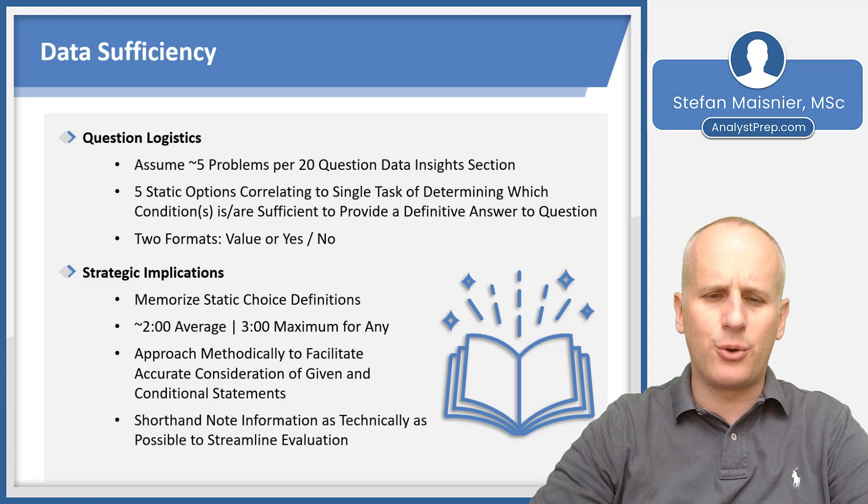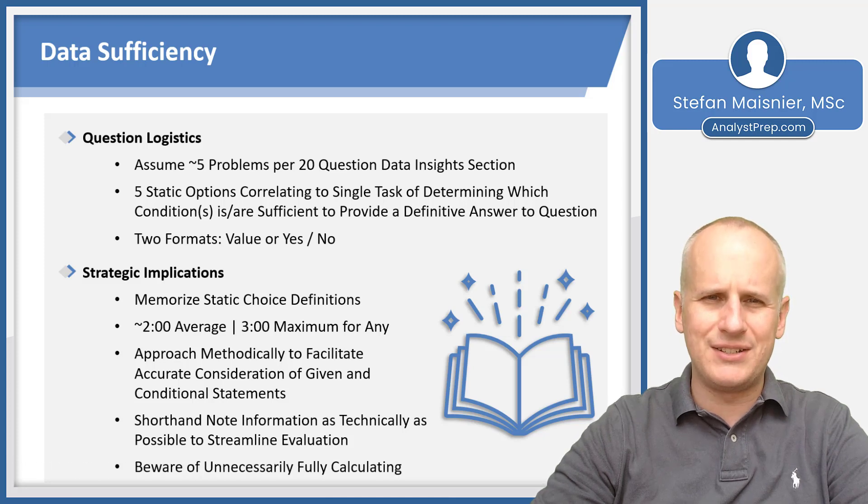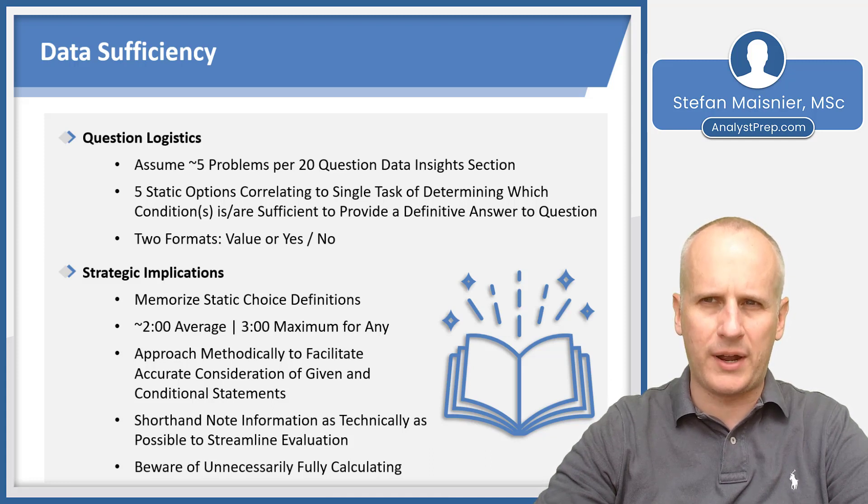You'll want to shorthand note your information that's provided by the given statement and the two individual conditional statements as technically as possible to help streamline your evaluation, and you do want to just be aware of unnecessarily fully calculating to a solution, because the data sufficiency is asking, can the answer be arrived to? It is not asking you to arrive to an answer.